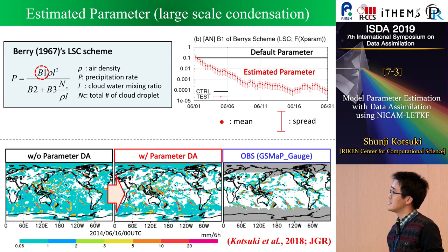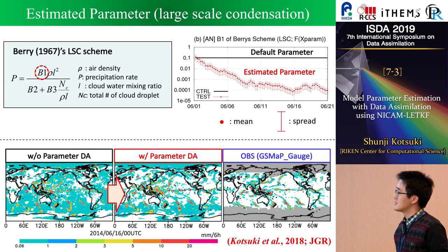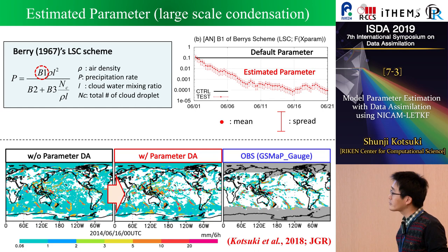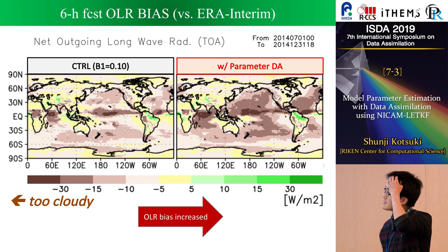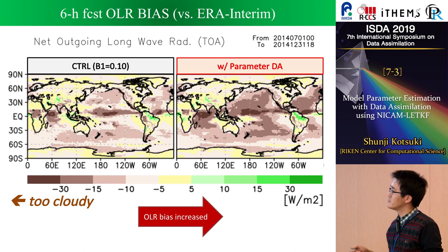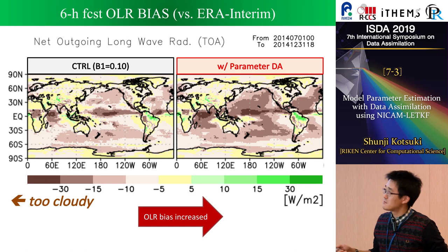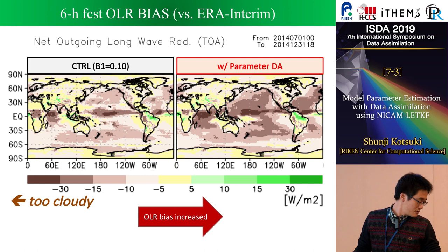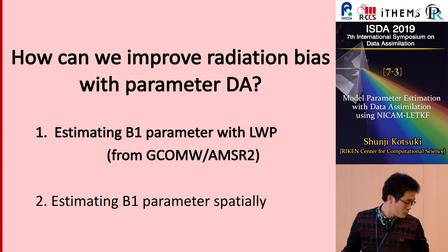We now see the change in the precipitation field due to parameter estimation. The left panel shows the control experiment without parameter estimation using the default model parameter, and the right panel shows with parameter estimation. The bottom panel is the precipitation field from satellite. With the default model parameter, the model tends to overproduce weak precipitation in this region, which we don't see in the satellite observation. Due to parameter estimation, we could improve the precipitation field. However, we found that unfortunately the radiation budget was degraded in this case — specifically, the outgoing longwave radiation (OLR) was degraded.